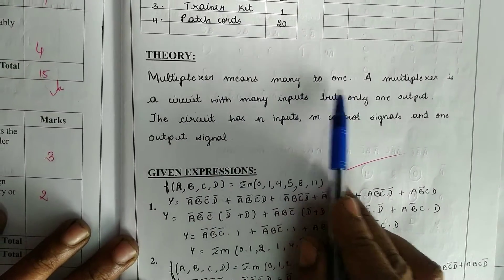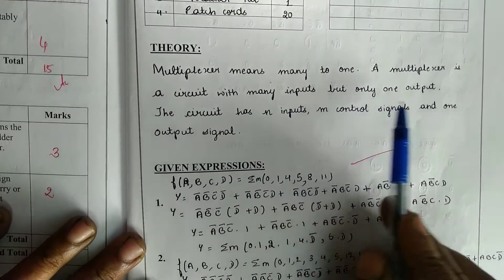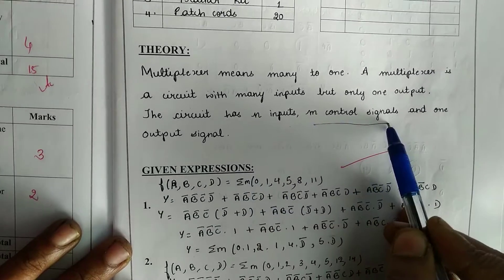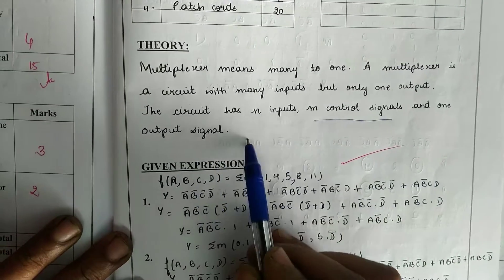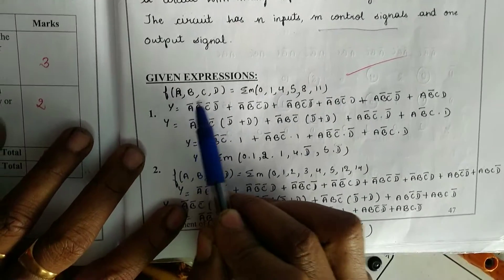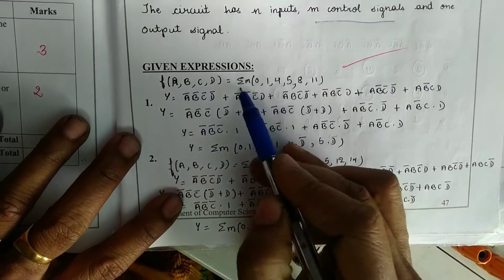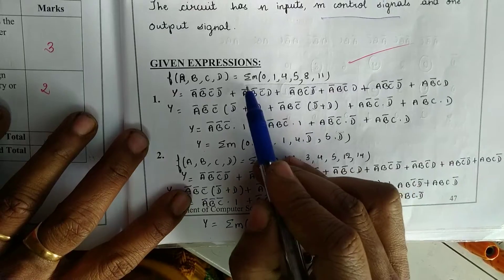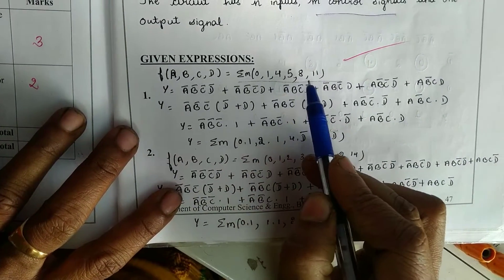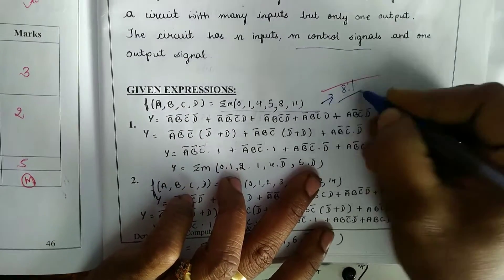Multiplexer means many-to-one. A multiplexer is a circuit with many inputs but only one output. The circuit has N inputs, M control signals, and one output signal. For the exam, you will get a Boolean expression f(a, b, c, d) as a 4-variable expression — a SOP equation: sigma of M(0, 1, 4, 5, 8, 11). This equation is first simplified into an 8-to-1 multiplexer.